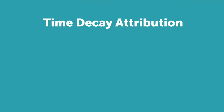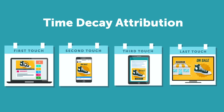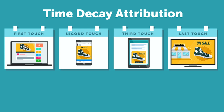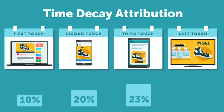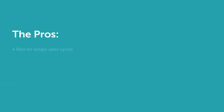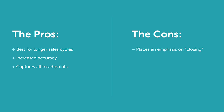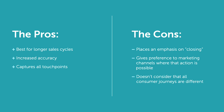Finally, there's time decay attribution. This is similar to linear in that it's a multi-touch model that gives some credit to all channels that led to the conversion. However, the amount of credit decays the further back in time the channel was interacting with the customer. This assumes that the first channel your customer interacted with merely planted the seed, and the customer's interest in committing to a purchase grew over time with repeated exposures to various marketing channels. Think of this as a rising level of interest and commitment from the customer over time. This model is usually better for longer sales cycles, as time between channel interactions highlights the difference in conversion credit received. A con is that it doesn't consider that all customer journeys are different, so the paths they took to convert may not be best analyzed from lowest to highest.